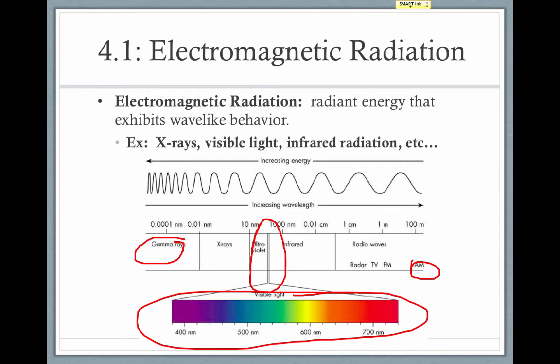Notice also that as you get a shorter wavelength, a smaller wavelength down this end, you have a higher energy, which is represented by the arrow up top. Therefore, gamma rays have a much higher energy than AM radio waves.